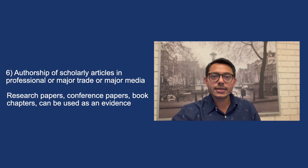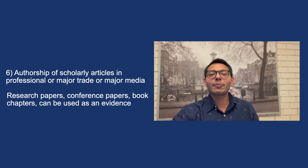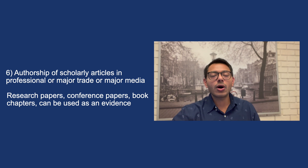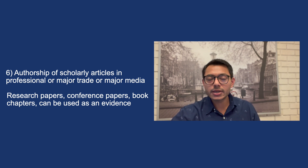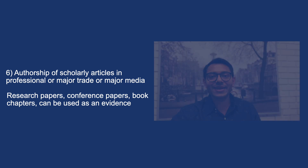The sixth criteria is evidence of authorship of scholarly articles in professional or major trade publications or major media. This can be a list of all the research papers you have published, all the book chapters you have written, or even books you have written. You can use all these forms of evidence to support or fulfill this criteria.